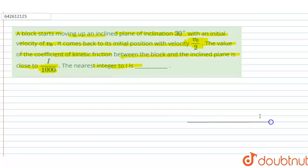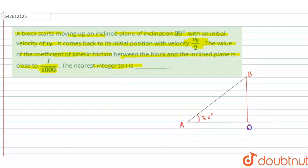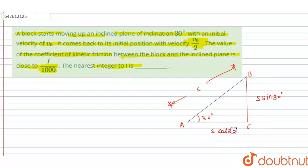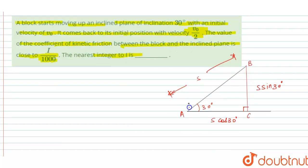Let us draw the figure. We have a horizontal plane and an inclined plane at 30 degrees. Let us consider point A at the bottom, point B on the incline, and point C. The length AB is equal to s — the distance between A and B. The vertical component is s·sin(30°) and the horizontal component is s·cos(30°).